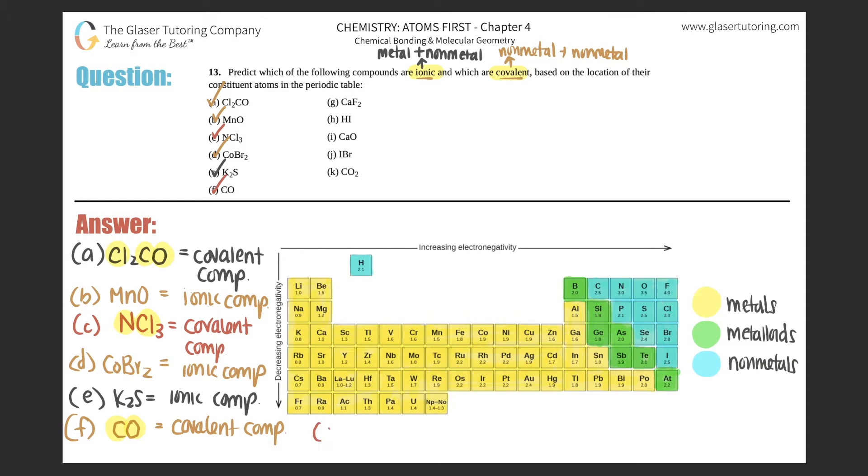G, CaF2, calcium fluoride. Calcium is a metal, it's over here, and fluorine is all the way over here. So we have a metal and a non-metal. This has to be ionic. This would be an ionic compound.